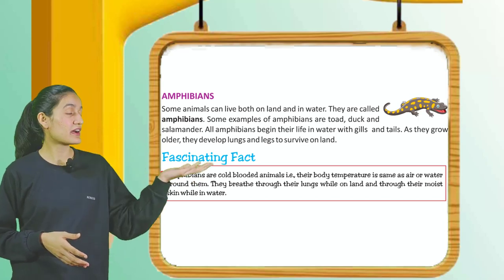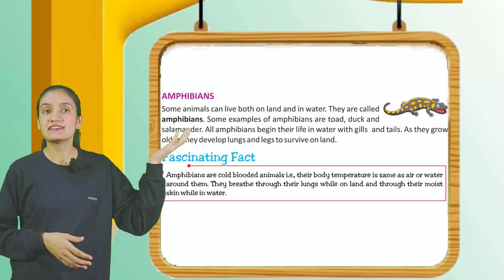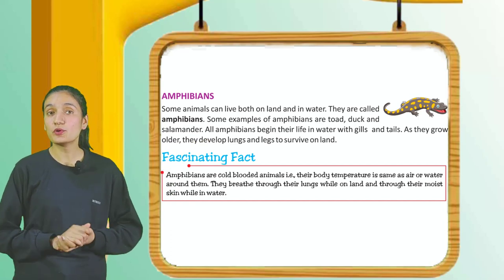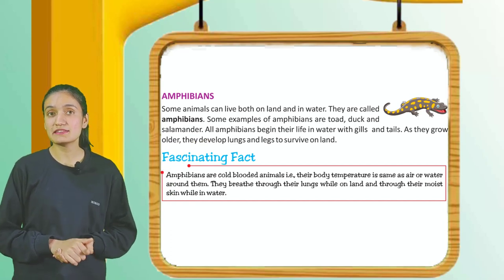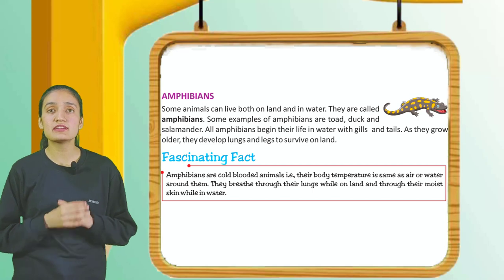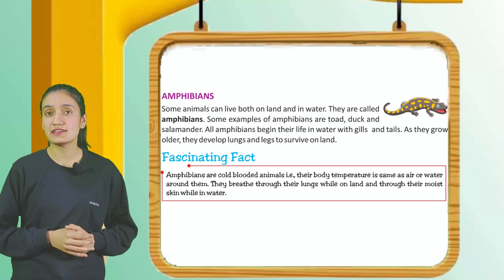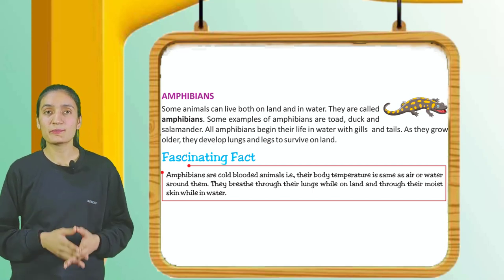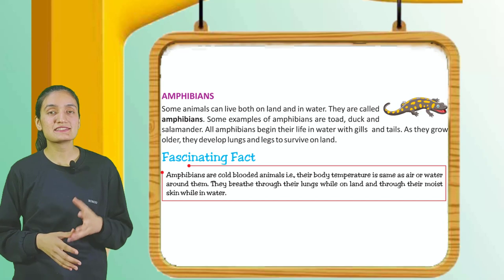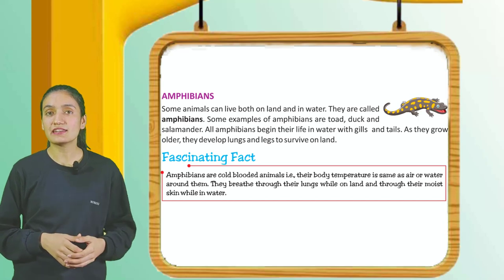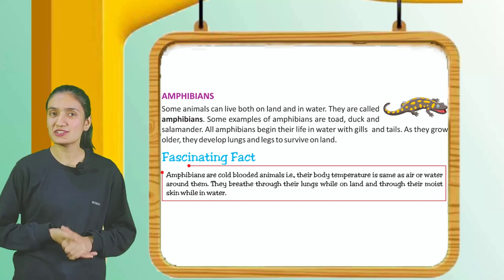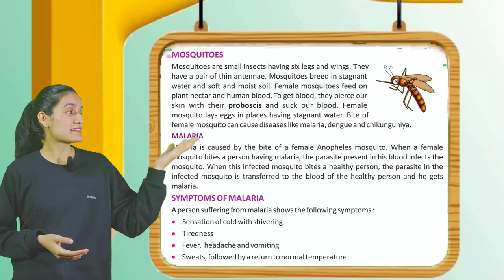Fascinating fact: Amphibians are cold-blooded animals — that is, their body temperature is the same as the air or water around them. They breathe through their lungs while on land and through their moist skin while in water.